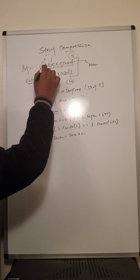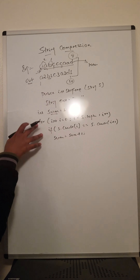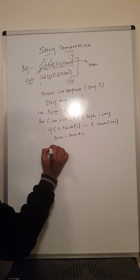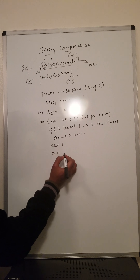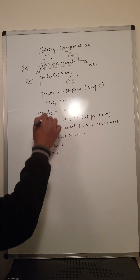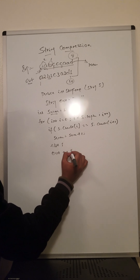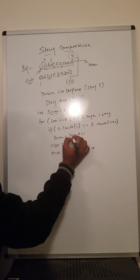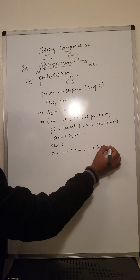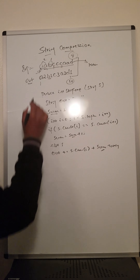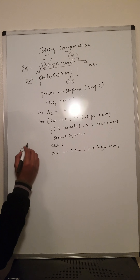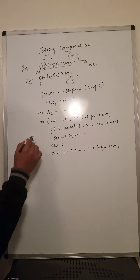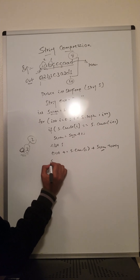Then check the next condition. In the else branch, our output will be: output equals output plus the character at i, concatenated with the sum as a string. So for a, the character is displayed first, then the count is two. Now our sum is two.